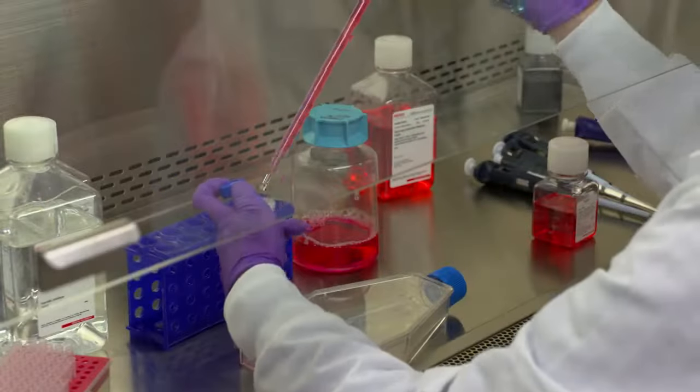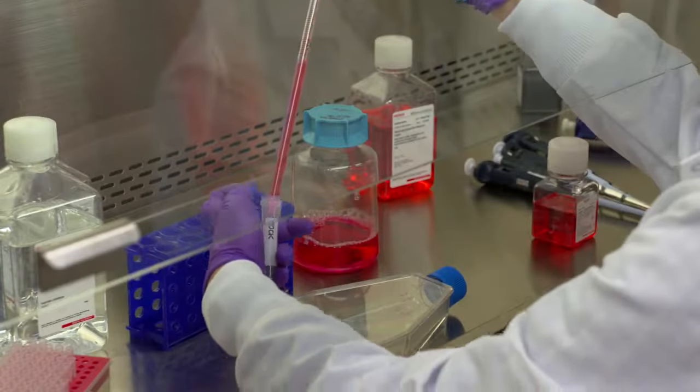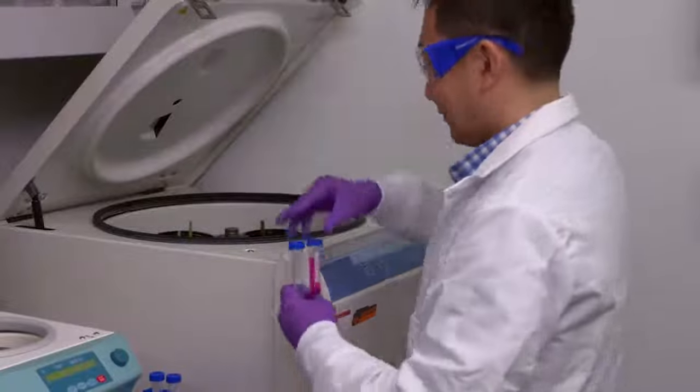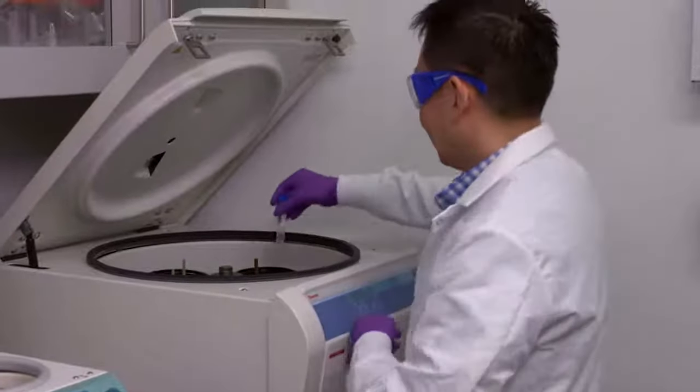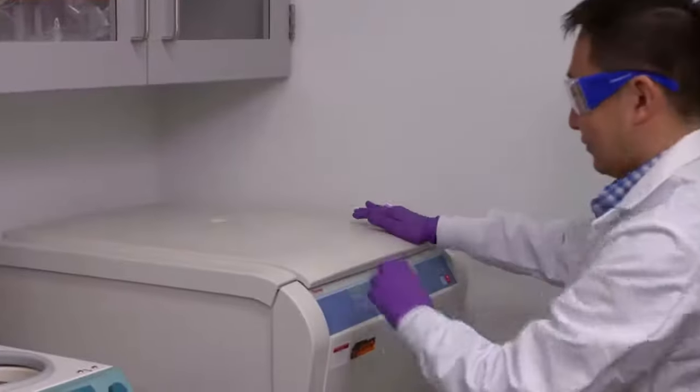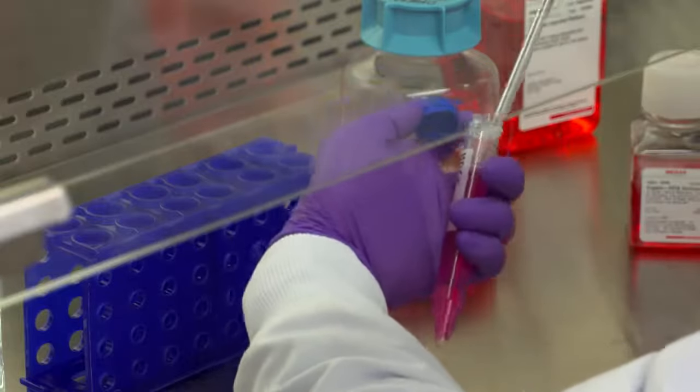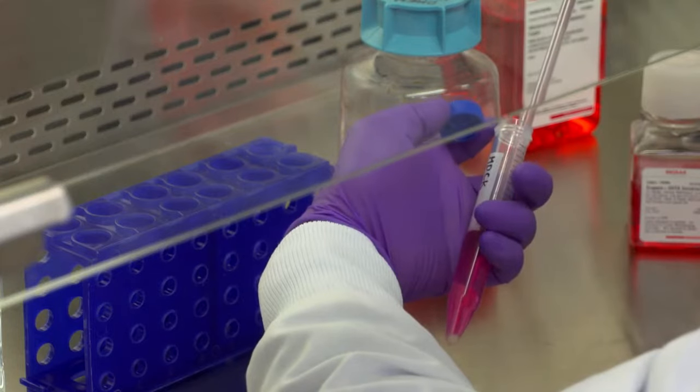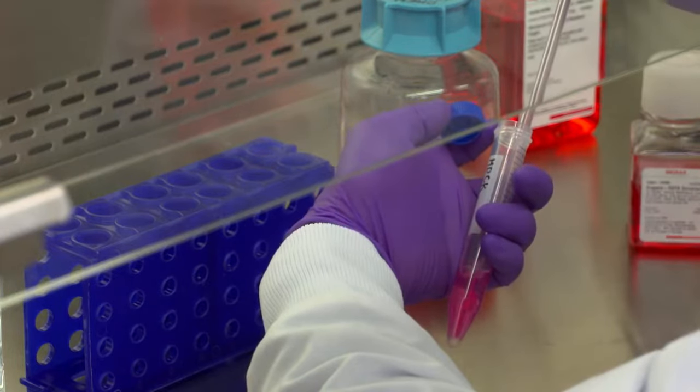Transfer cell suspension to a conical tube and centrifuge for 3 minutes at 300g. Centrifugation condition will vary for different cell types. Discard the supernatant and gently resuspend cell pellet to a suitable volume for counting.